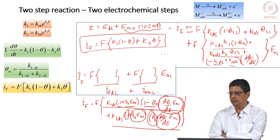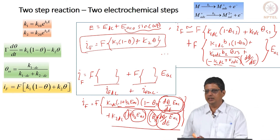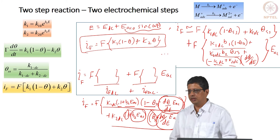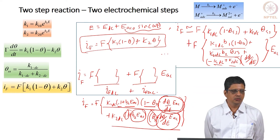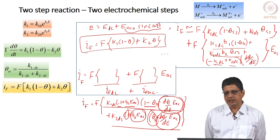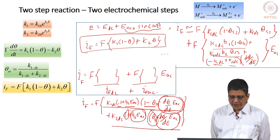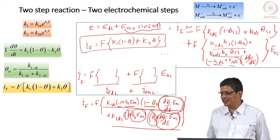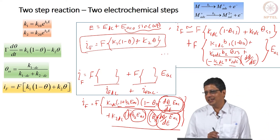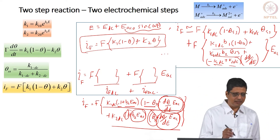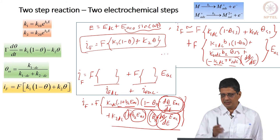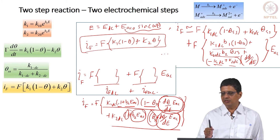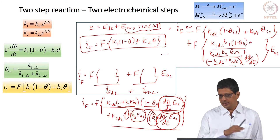You may not get it in exactly this form but it should be equivalent. To do this, you should be able to expand in Taylor series, truncate, rearrange, and do the algebra correctly. Once done, I would like you to get the expression for d(theta)/dE by taking the mass balance equation, expanding each term in Taylor series, truncating after the first-order term, and rearranging.